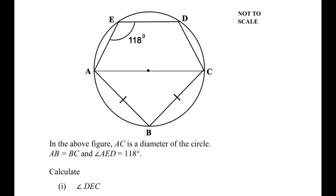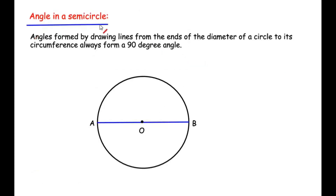Let us start with the first angle where we have to find angle DEC — that is this small angle. To find the value of this angle, let us make use of a circle theorem: angle in a semicircle. This theorem states that angles formed by drawing lines from the ends of the diameter of a circle to its circumference always form a 90 degree angle.